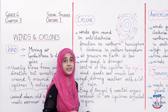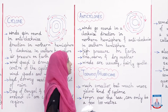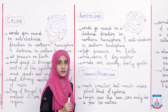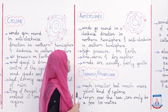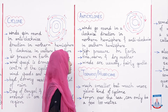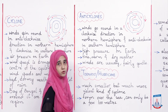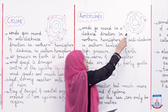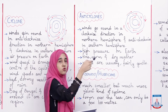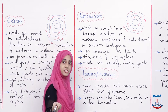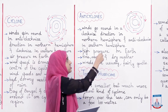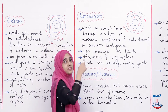Now let's talk about anti-cyclones. An anti-cyclone is quite the opposite of a cyclone. Winds go round in a clockwise direction in the northern hemisphere and anti-clockwise in the southern hemisphere. Clockwise direction — yaani ki jis direction mein ghari ki suiyaan move kerti hai, usko hum kehte hain clockwise direction, which is opposite to anti-clockwise direction.